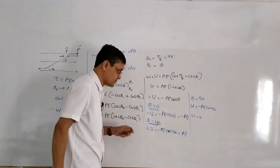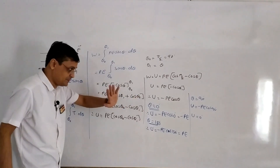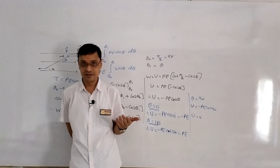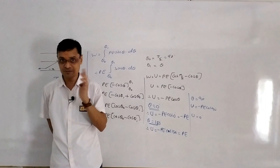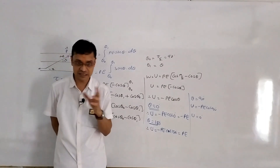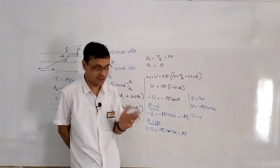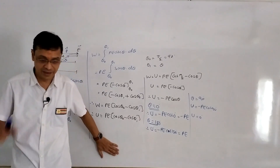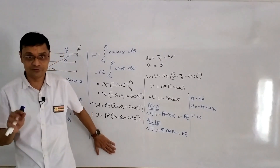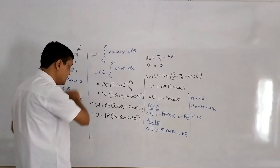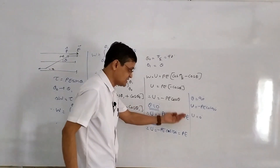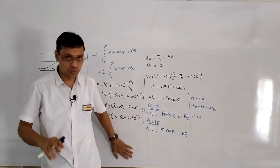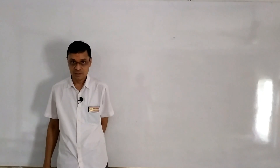To summarize: from Chapter 1, torque = PE sin theta, and from today's derivation, energy U = minus PE cos theta. The equations from Chapters 1 and 2 must be properly prepared together. This covers the energy of an electric dipole in a uniform electric field along with the special angle cases.